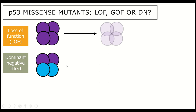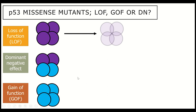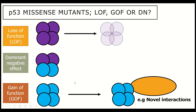The second type is referred to as dominant negative effect, where the mutated protein might interact with the wild type copy and prevent the action of the wild type protein. The last potential consequence is referred to as gain of function, whereby these mutated p53 proteins do something different that wasn't seen before. So either by losing functions or by gaining new functions, this mutated p53 protein is thought to be able to drive tumorigenesis.